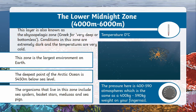Now we're diving into the abyss at the lower midnight zone. This zone is between 4000 and 6000 meters below the surface. The conditions in this zone are extremely dark and the temperatures are very cold. This zone is the largest environment on earth, and the deepest point of the Arctic Ocean is 5450 meters below sea level. Some of the organisms that live in this zone are sea spiders, basket stars, medusas, and sea pigs.